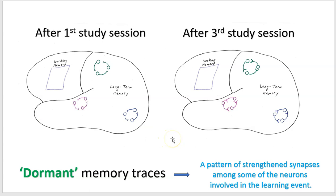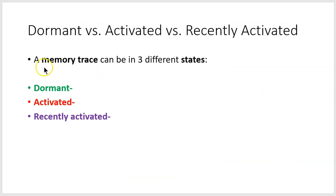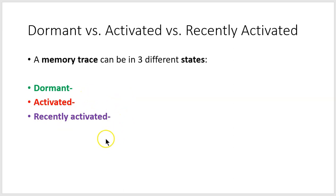You have all kinds of dormant memory traces right now in your brain. It's when we reactivate those memory traces that we retrieve the information. A memory trace can be in three different states: dormant, activated, and recently activated. Most of the information stored in our brain at any given time exists as dormant memory traces. We'll see the distinctions between all three as we continue with the lesson.